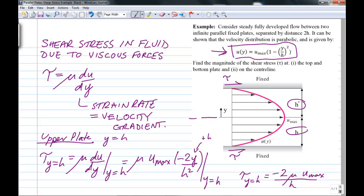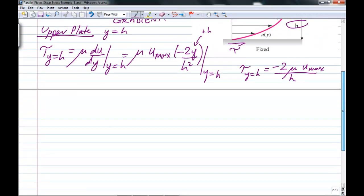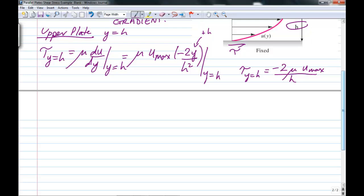And that's the answer to part a. Let me just start a new page and scroll down. Now the problem asks for the absolute value of the shear stress. So I'm going to take the absolute value of that and that's 2 mu u max upon h. And that's the answer to part a.